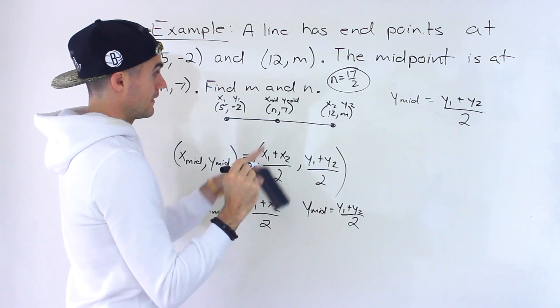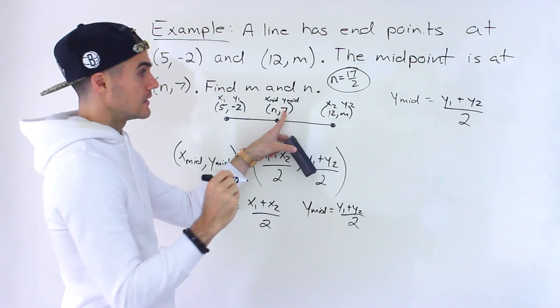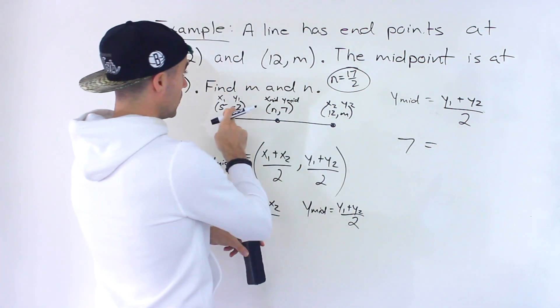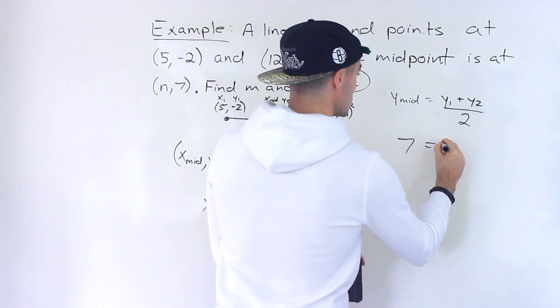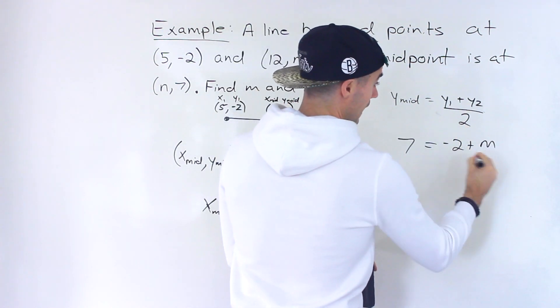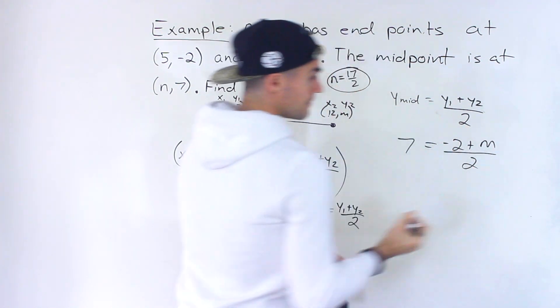So the y value of the midpoint, notice that we're given that in this case, so it's 7. So we're not solving for that. y1 is -2. And then y2 is what we're solving for, that m value. And then we're going to be dividing that by 2.